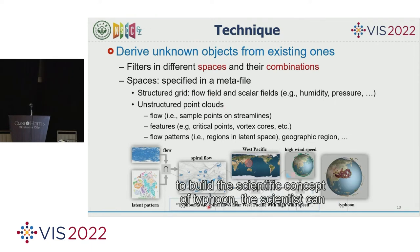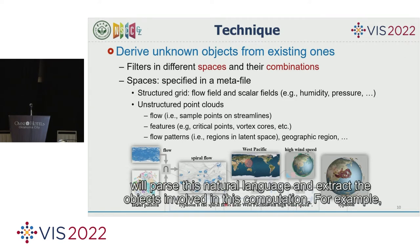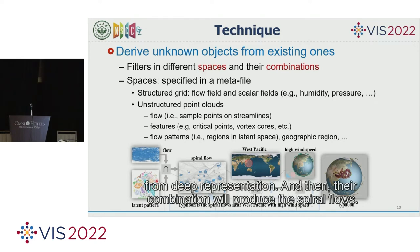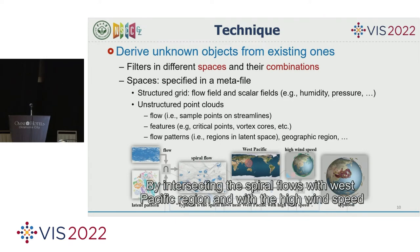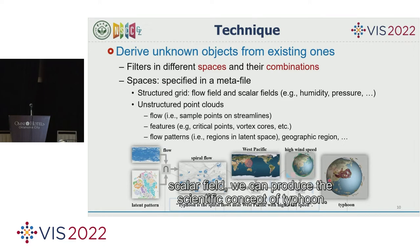For example, to build the scientific concept of typhoon, the user specifies that the typhoon is the spiral flow near the western Pacific with high wind speed. The system parses this natural language and extracts the objects involved in the computation. The streamlines are the flow, and the pattern 'spiral' is a region in the latent space from a deep representation. Their combination produces spiral flow, and by intersecting spiral flow with the western Pacific region and the high wind speed scalar field, we produce the concept typhoon.